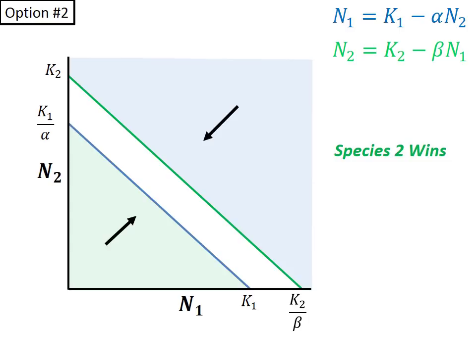However, this time in the middle, we are below isocline 2 and above isocline 1, so the exact opposite happens. Species 1 decreases and is eventually driven to extinction, as species 2 increases and stabilizes at its carrying capacity. Species 2 wins.